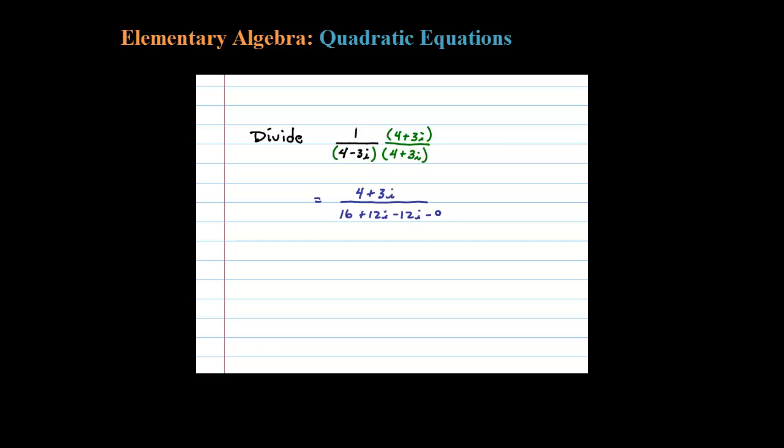Okay, when you multiply by the conjugate, this will always happen: we have plus 12i minus 12i, which adds to zero.